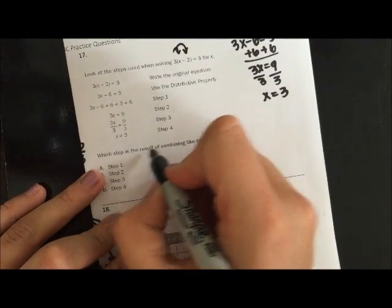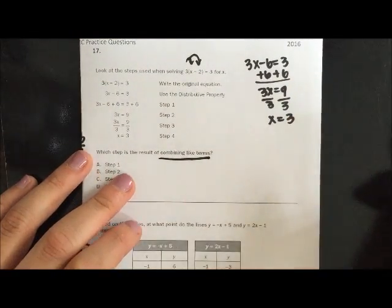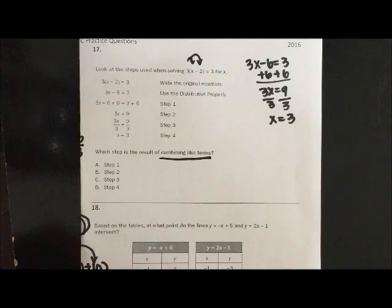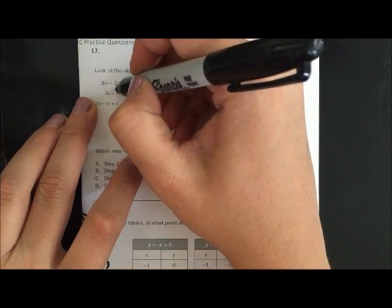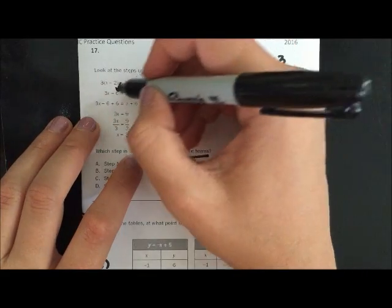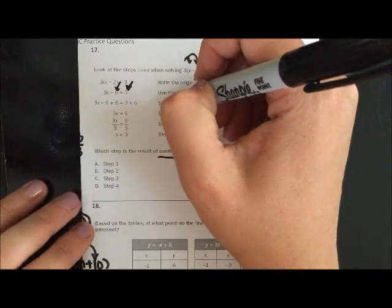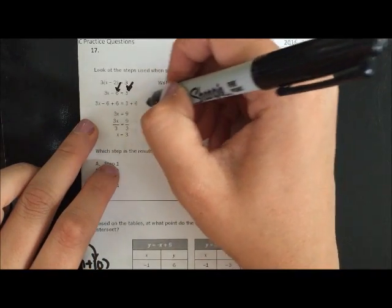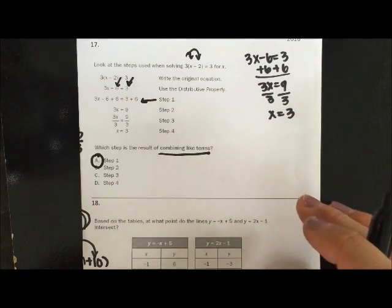The question is, which step is the result of combining like terms? Well, combining like terms means adding those terms together that are alike. And right here I have a constant. And right here I have a constant. So adding the 6 over is actually combining those two constants. So that step, that process is done in step number 1. So A would be your option.